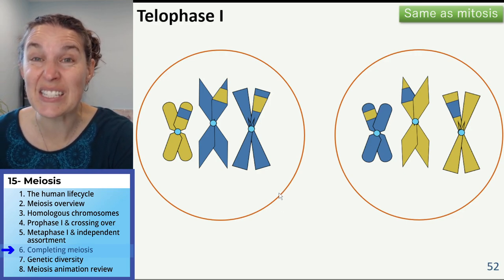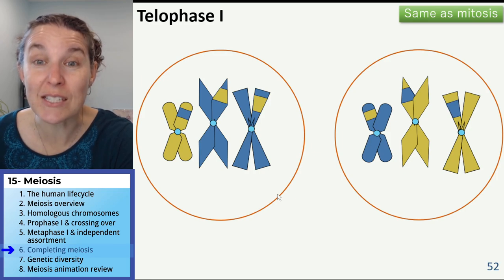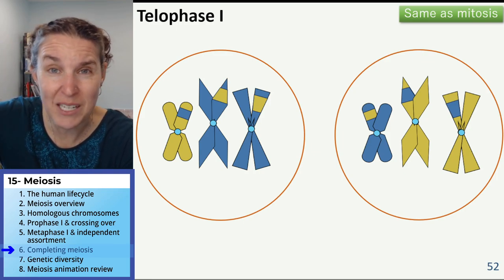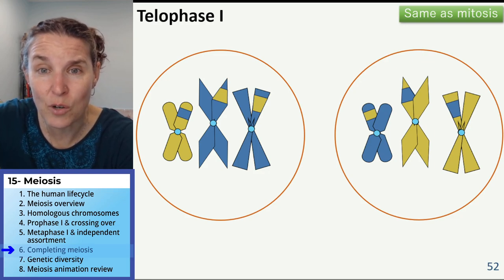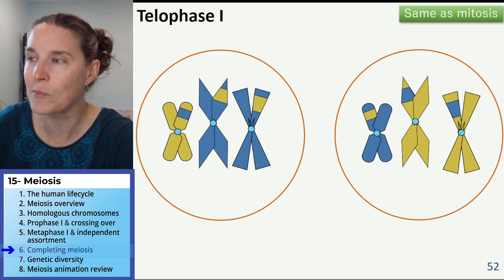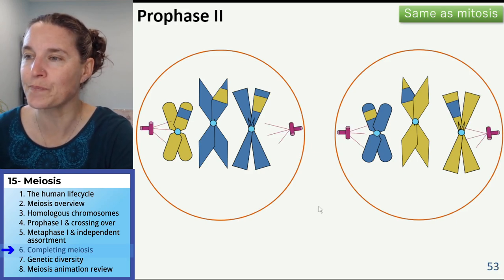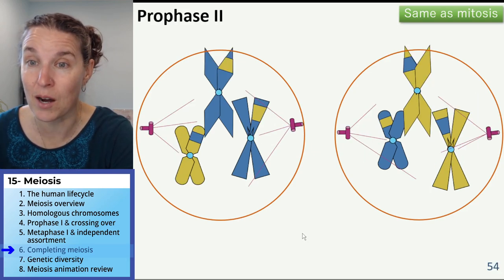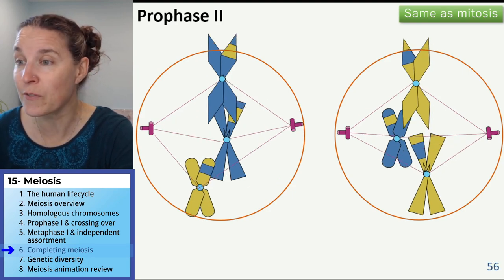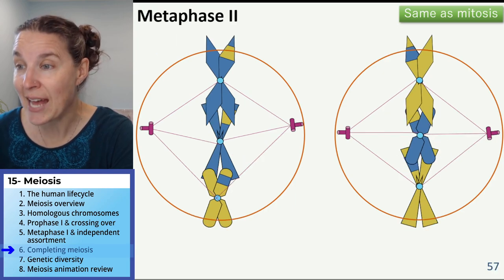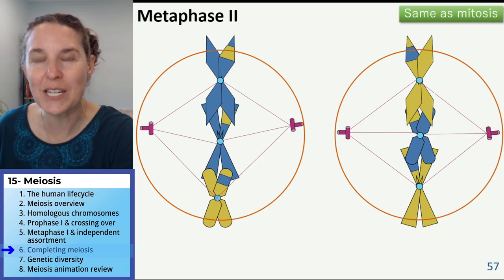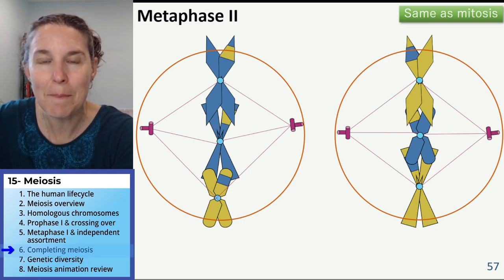This mitosis, meiosis two, is identical. It's identical to mitosis. We're just splitting chromatids, splitting sister chromatids. Let's watch. Here come our centrioles and our spindle fibers. We're attaching. We line up on the metaphase plate just like normal. But do you see how this is like mitosis?